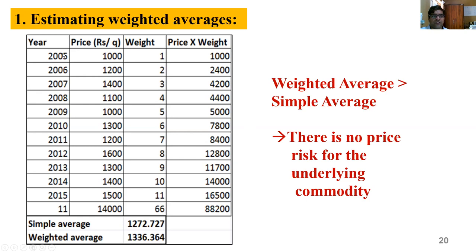If the data are available in the public domain, the farmer can make use of it. Based on his experience, the farmer can calculate price risk for a commodity like groundnut. In the year 2020, if the farmer wants to decide whether to cultivate groundnut or not, he can do this simple calculation. If the weighted average is more than the simple average, the farmer can conclude there is no price risk and decide to go ahead with groundnut cultivation.